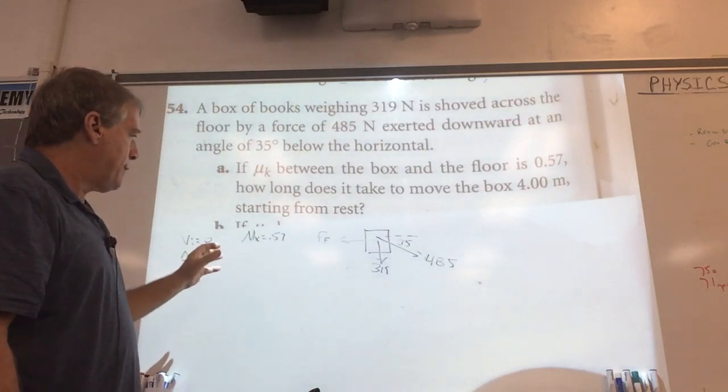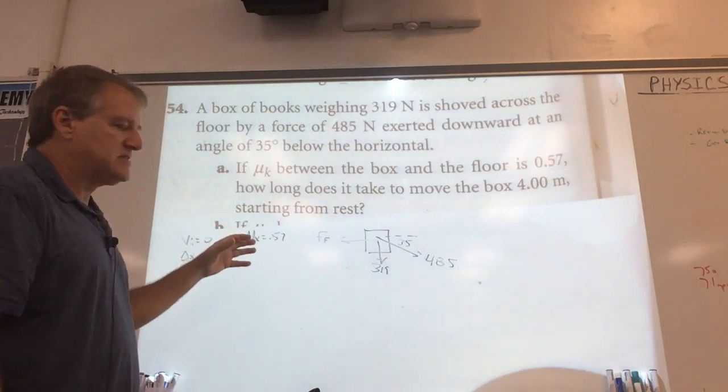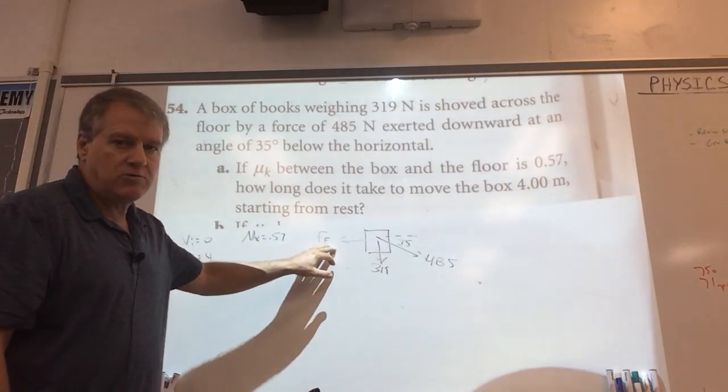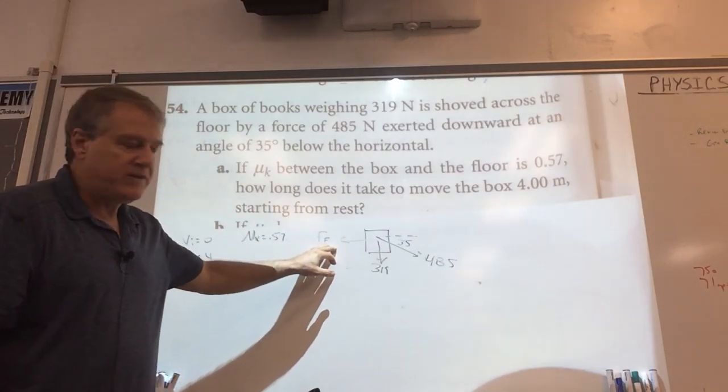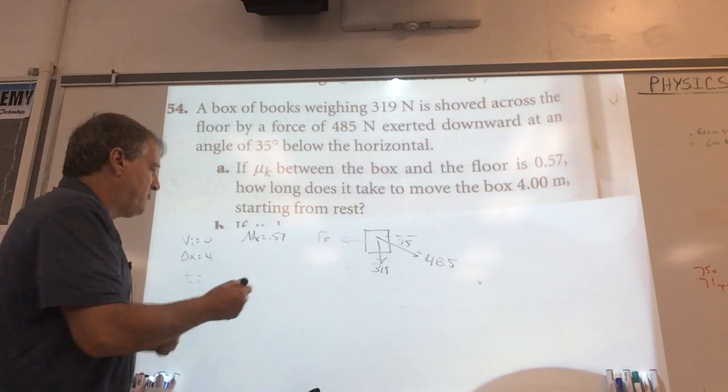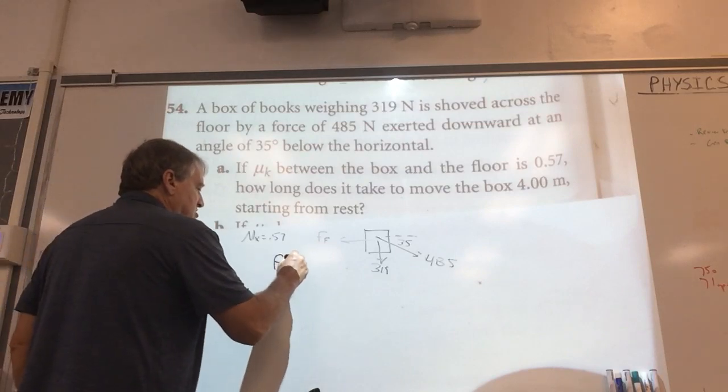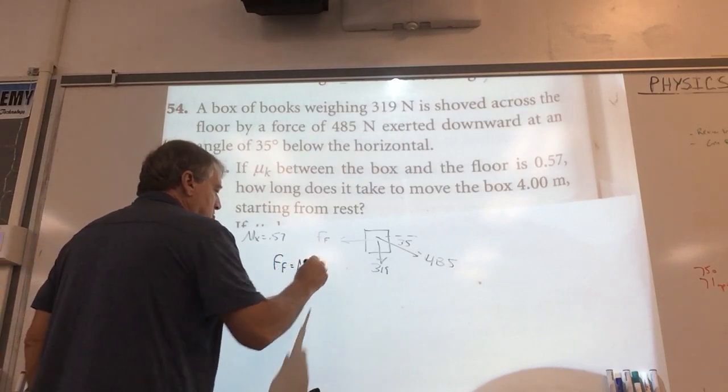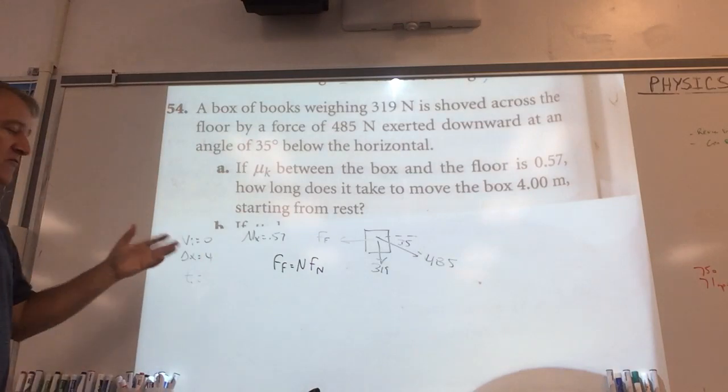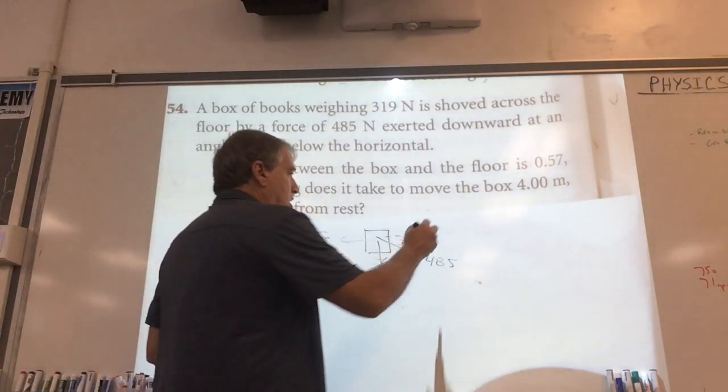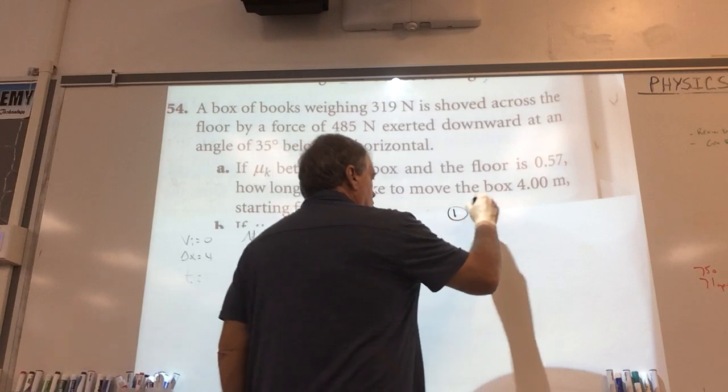All right. So the first thing I know is I've got to look for the sum of the forces in the x direction. But I realize right away I don't know the frictional forces. Now, in order to find the frictional forces, I know that force of friction is equal to mu times the normal force. Then I'm going to have to find the normal force first. So that's going to be step one. Find the normal.